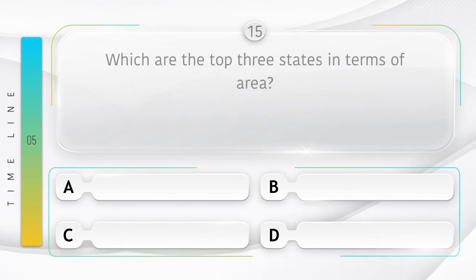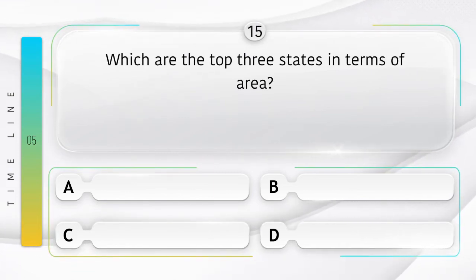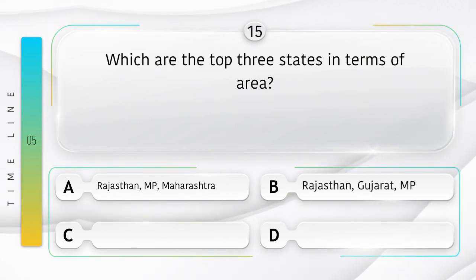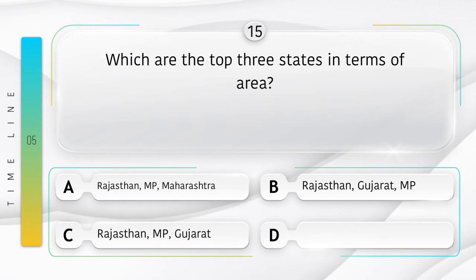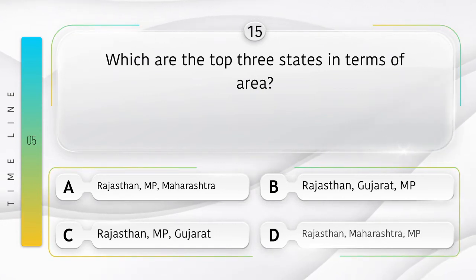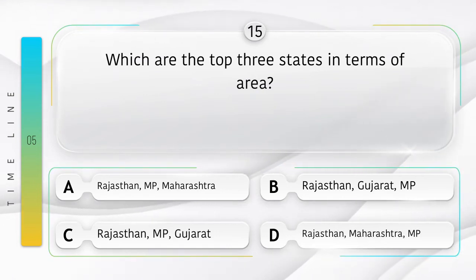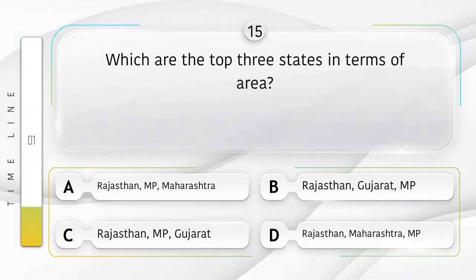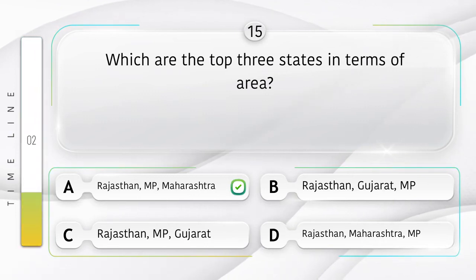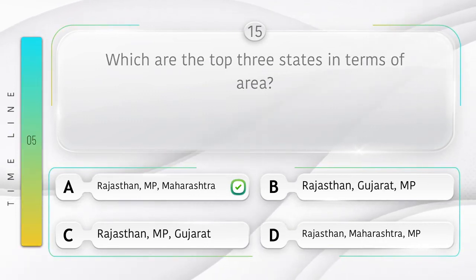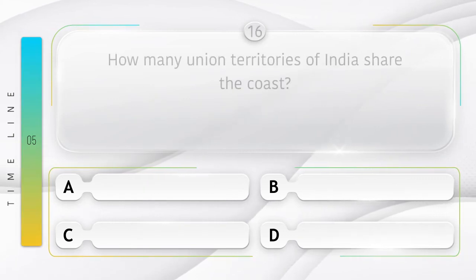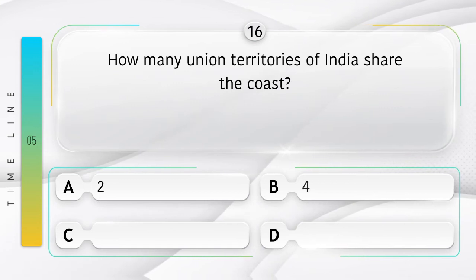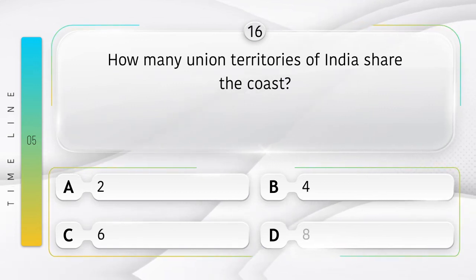Which are the top three states in terms of area? Option A: Rajasthan, MP, Maharashtra; B: Rajasthan, Gujarat, MP; C: Rajasthan, MP, Gujarat; D: Rajasthan, Maharashtra, MP. Answer is option A: Rajasthan, MP, Maharashtra.